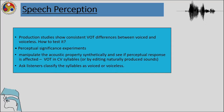A lot of speech perception research has shown that speech perception cues are the ones which help people make those distinctions. Production studies show consistent VOT differences between voiced and voiceless sounds — between 20 to 25 milliseconds — and that is also shown in production studies. Perceptual significance experiments manipulate the acoustic property synthetically or by editing, and see if perceptual response is affected. VOT in CV syllables can be studied using naturally edited produced sounds, and listeners are asked to classify syllables as voiced or voiceless.